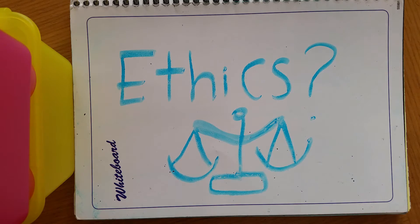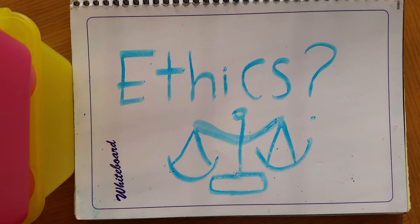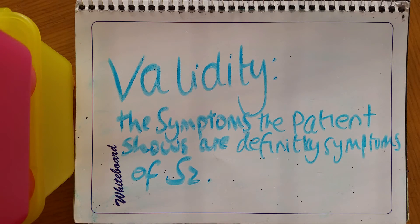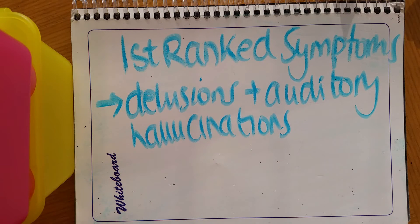Although Rosenhan's study sheds light on serious flaws with psychiatric hospitals diagnosing schizophrenia, some have argued it was unethical, as Rosenhan deceived the hospitals and real patients who needed admission were sent away, potentially worsening their condition. Moving on to validity — just as reliability of diagnosing schizophrenia is low, diagnosing the disorder also seems to be done with little validity. A valid diagnosis would imply the patient's symptoms are definitely symptoms of schizophrenia, but research implies they are often mirrored in other mental illnesses.